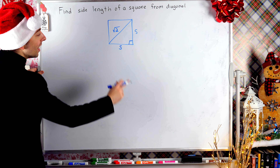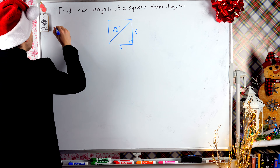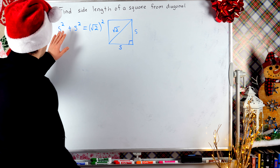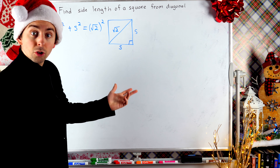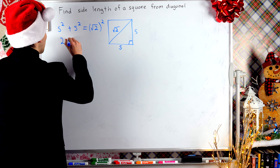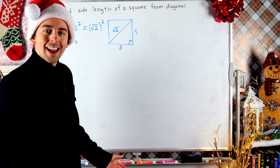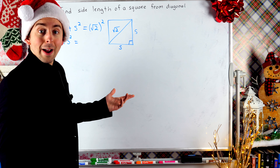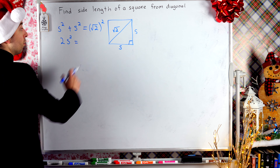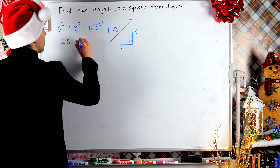So let's write that equation using the Pythagorean theorem. The sum of the squares of the legs — S squared plus S squared — must equal the square of the hypotenuse, so that's square root of 2 squared. S squared plus S squared is 2S squared. So we have that 2S squared equals the square root of 2 squared. By definition, square root of 2 squared is just 2 — the square root and the square undo each other — so this is equal to 2.